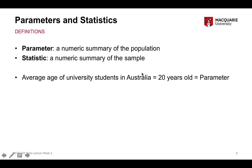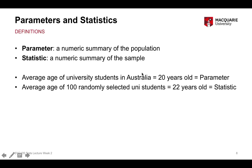For example, let's say the average age of university students in Australia is 20 years old — I'm making that up but it sounds about right. That's our parameter: a numeric summary of our wider population of interest. We could have a sample of 100 university students randomly selected from universities across Australia, and the average age in that sample is, say, 22 years — that's a statistic. The statistic represents the sample, whereas the parameter represents the population.